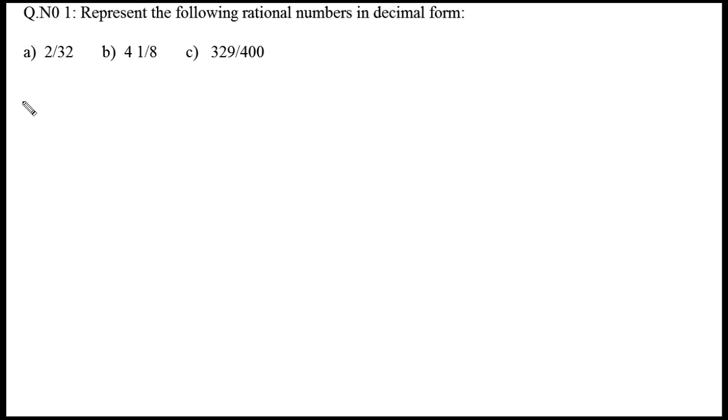Solution: The first one is 2/32. Before division, we have to check whether there are any common factors for numerator and denominator. In this case, we have 2 as a common factor for both 2 and 32. So let's divide numerator and denominator by 2. This gives us 2÷2/32÷2, so the resulting fraction is 1/16.